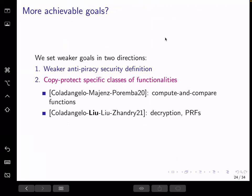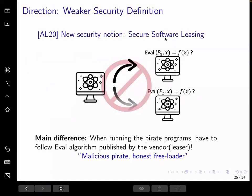But we will focus on the first direction here, in terms of the results in our paper. Before talking about our result, we want to mention that in the same paper that gives the impossibility result, the authors also give a weakened security notion for copy protection. This notion is called secure software leasing.